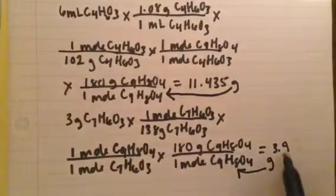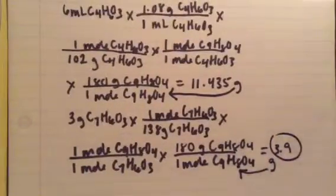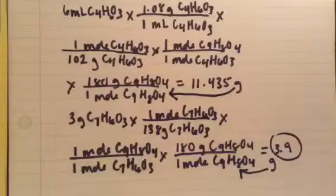Because 3.9 grams is the lesser number, this is the theoretical yield of the aspirin.